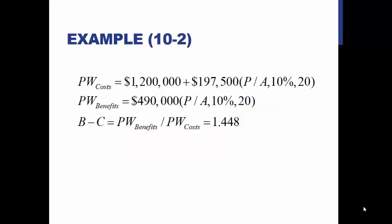Let's calculate the net present value of both the costs and the benefits. We had $1,200,000 in total upfront costs, and then another $197,500 in annual operation, maintenance, and wages. We discount that annual cost back to the present at 10% for 20 years. Similarly, the annual benefits are $490,000, multiplied by the same discount factor. The benefit-cost ratio is the present worth of the benefits divided by the present worth of the costs, which is 1.448. The benefits outweigh the costs — the ratio is greater than 1 — so Columbia would be justified in building the new runway.